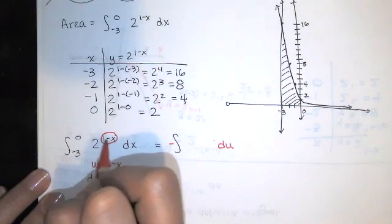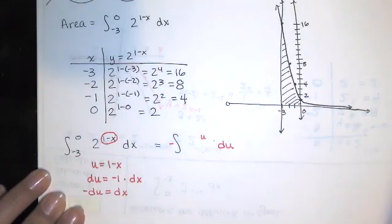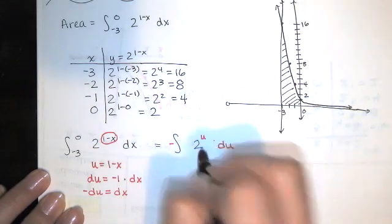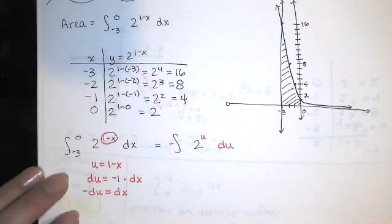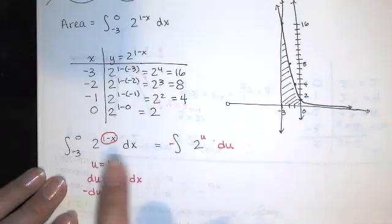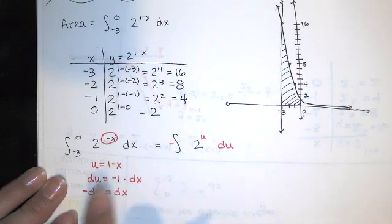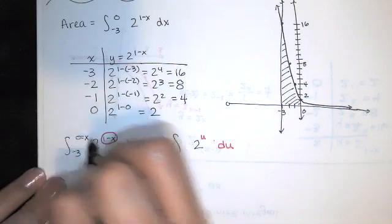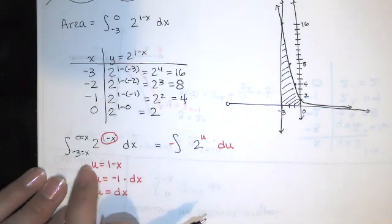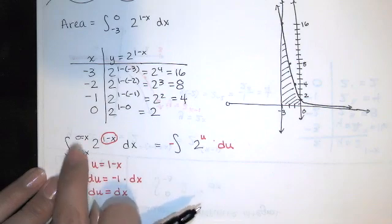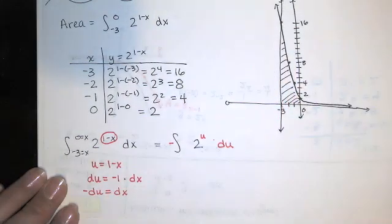And then this is 2 to the u power. The 2 is still there. Now I'm not quite done yet. In order for these to truly be equal to each other, I need bounds for u. This is an area under the curve between x=-3 and x=0. It's that area.